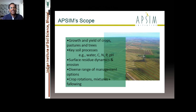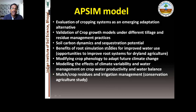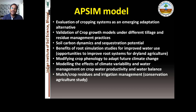What does APSIM do? It simulates growth and yield of crops, pastures, and trees, and different key soil processes including water, nitrogen, carbon, phosphorus, soil pH, surface residue dynamics, mulching, and surface erosion. It works on a diverse range of management options — crop rotations, mixtures, fallows, cropping systems, and inter-cropping. It evaluates cropping systems as emerging adaptation alternatives in climate change impact analysis, and can be used for validation of crop growth models under different tillage and residue management practices.